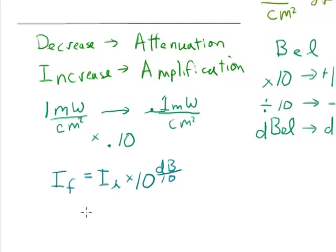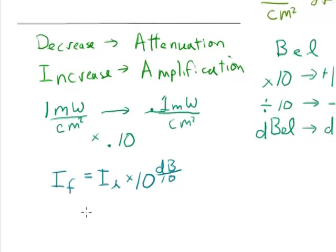So let's say I have an initial intensity of 50 milliwatts per square centimeter, and I have a change in decibels of, I want to increase, that's going to decrease, let's say we have an attenuation of 10 decibels.